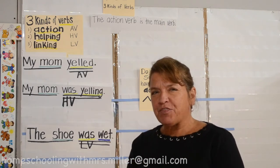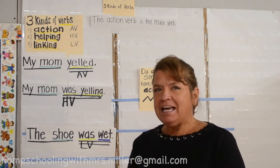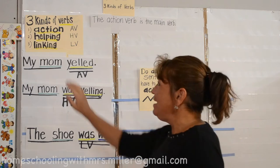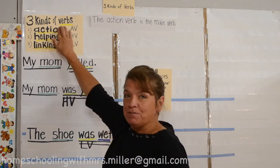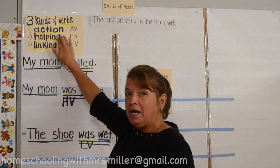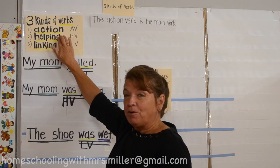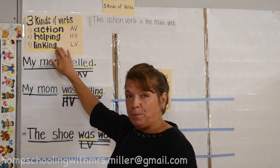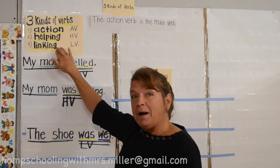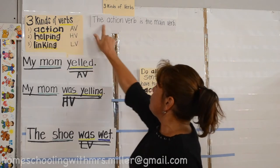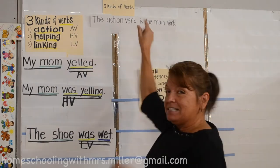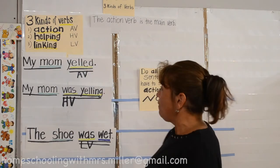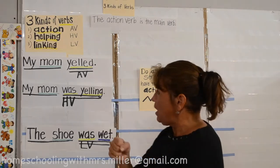We're going to look at three kinds of verbs. Number one, action verb. Number two, helping verb. And number three, linking verb. Keep in mind that the action verb is the main verb of the sentence. All right, here we go.